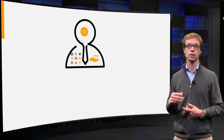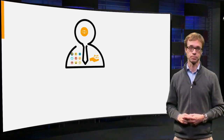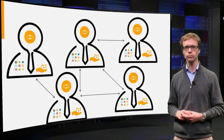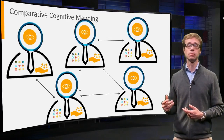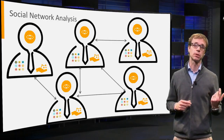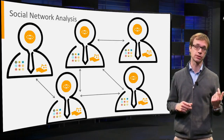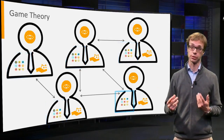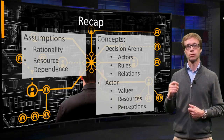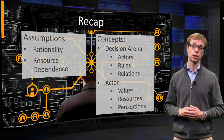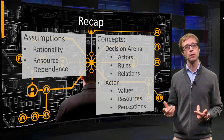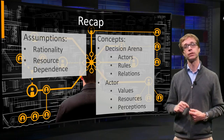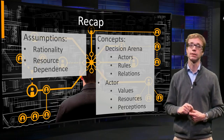Together these concepts provide a framework for actor modeling. Different actor models focus on different parts of this framework. Comparative cognitive mapping helps to analyze perceptions. Social network analysis helps to analyze the relations among actors. Game theory models help to analyze the resources of different actors. So we have looked at the conceptual framework for actor modeling, because this helps us to understand why we are using a particular type of actor model. There are two fundamental assumptions and different basic concepts at network level and at actor level.